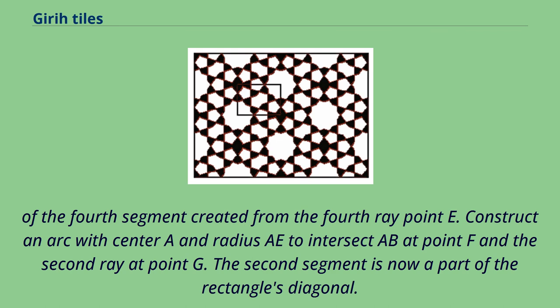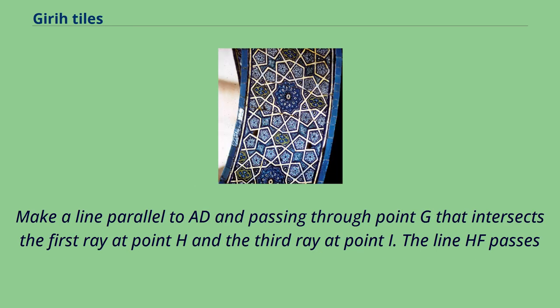Construct an arc with center A and radius AE to intersect AB at point F and the second ray at point G. Make a line parallel to AD passing through point G that intersects the first ray at point H and the third ray at point I. The line HF passes through point E and intersects the third ray at L and line AD at J.